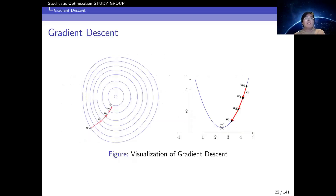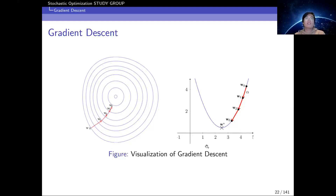To visualize gradient descent, there are two classical pictures. In the contour plot on the left, the outer circles represent higher loss and inner circles represent lower loss. Starting from initial point W₀, running gradient descent moves the solution toward the optimal W* in the direction opposite to the gradient. Alternatively, for a quadratic function, starting from W₀ with an appropriate step size, the solution gradually moves toward the lowest point W*.